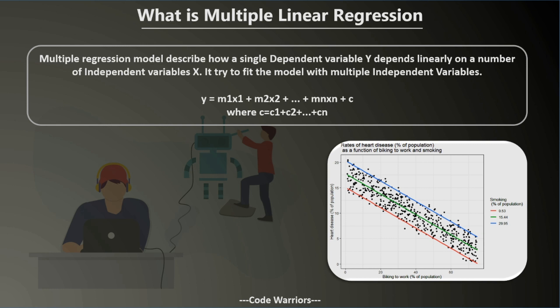For example, in this image you can see biking to work — the percentage of people that use a bike to commute — on the x-axis, and on the y-axis the dependent variable is the percentage of population with heart disease. From this graph you can conclude that people who exercise more tend to have a lower rate of heart disease. But you can't predict the dependent variable based on a single independent variable alone; there might be multiple factors. For instance, the rate of heart disease doesn't only depend on biking to work — it also depends on whether the person smokes, and many other factors.